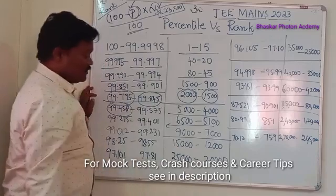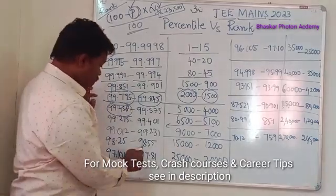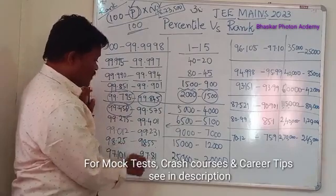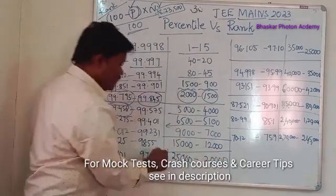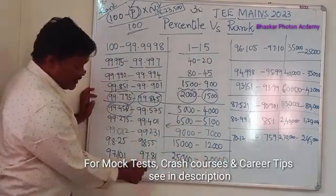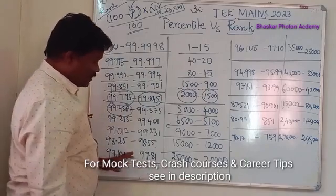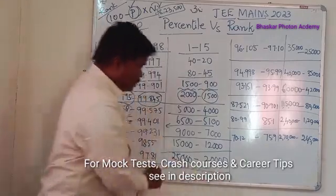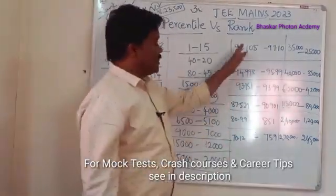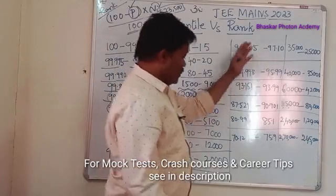Percentile range 98.55 to 98.25 corresponds to ranks approximately 12,000 to 15,000. Percentile range 97.81 to 97.1 corresponds to ranks approximately 20,000 to 25,000. You can work out the remaining values similarly using the formula.